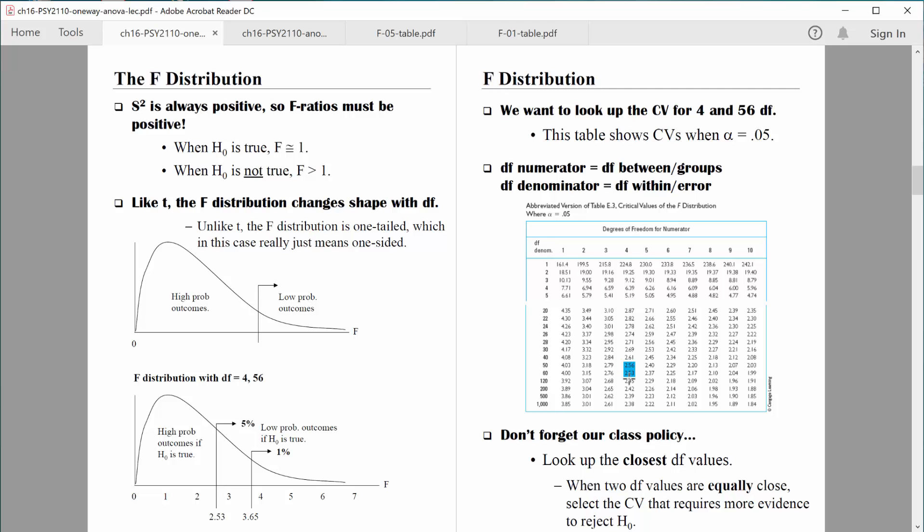Don't forget our class policy: we always look up the closest value. When two values are equally close, like if I had 55 degrees of freedom, I would always pick the value that requires more evidence. But in this situation we have 56 degrees of freedom and that's closest to 60, so it was kind of a no-brainer. Now it turns out that the tables that we are using are specified for an alpha level. So this particular table is specified for an alpha of 0.05, and then we have a separate table for an alpha of 0.01.